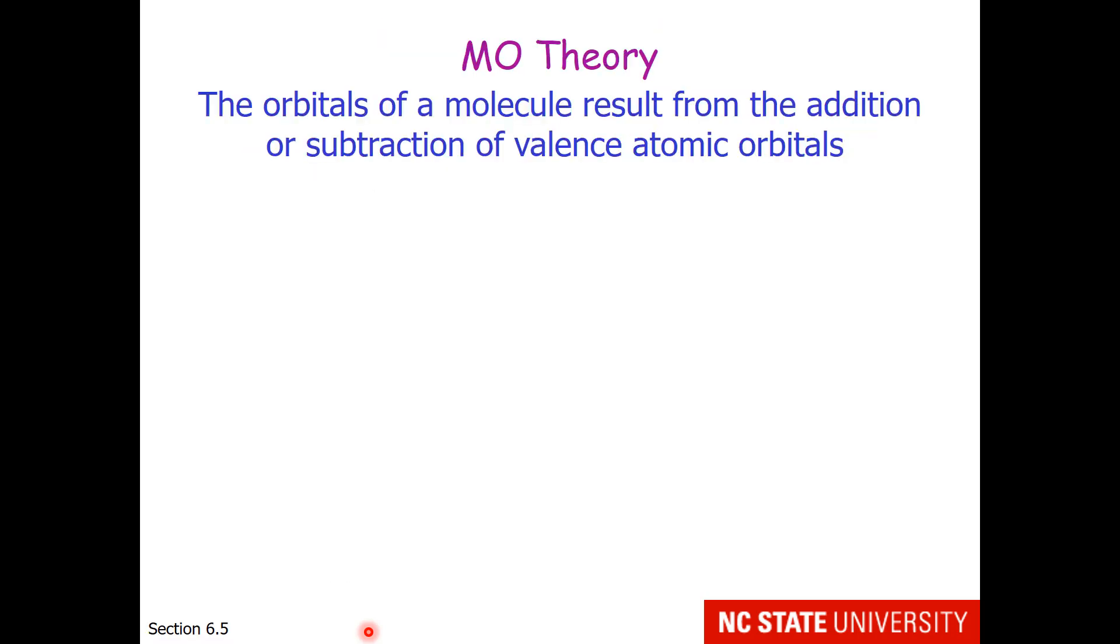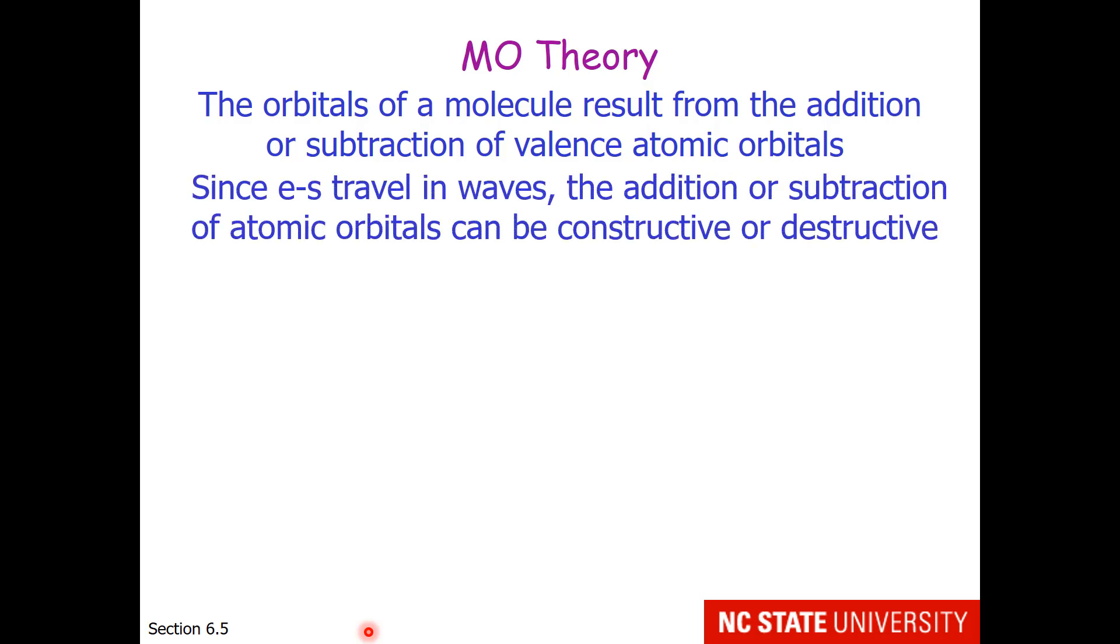So in MO theory, the orbitals of a molecule result from addition and subtraction of the valence atomic orbitals. Now since electrons travel in waves, according to de Broglie, the addition or subtraction of atomic orbitals can be either constructive or destructive. So if two waves are precisely in phase with one another, the peaks align and the valleys align, you get amplification of the waves. This would be constructive addition.